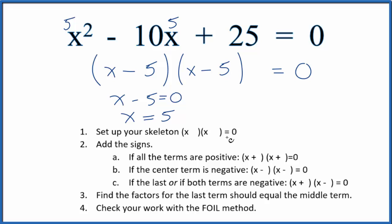This is Dr. B factoring x squared minus 10x plus 25 equals 0. Thanks for watching.